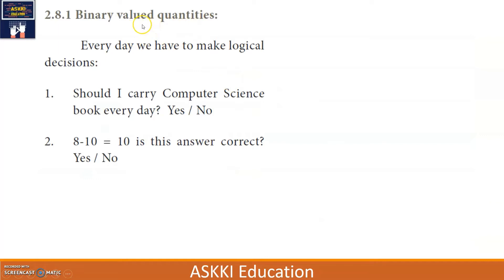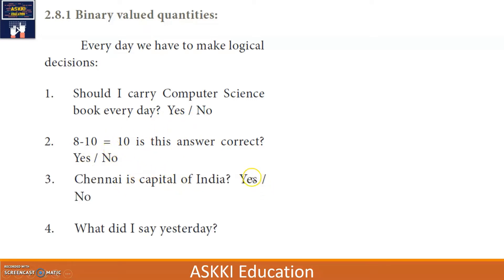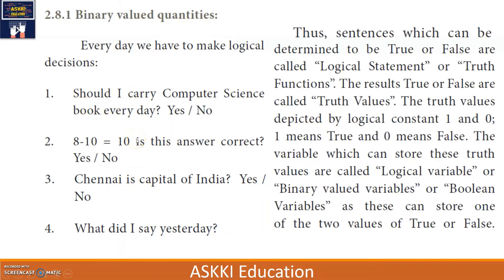Coming to binary-valued quantities — we have to make logical decisions. For example, should I carry a computer science book every day? The answer will be either yes or no. Is this answer correct? We will say yes or no. Is Chennai the capital of India? We will say yes or no. Most questions require only logical decisions — whether a statement can be determined to be true or false. All such statements are logical statements or truth functions.